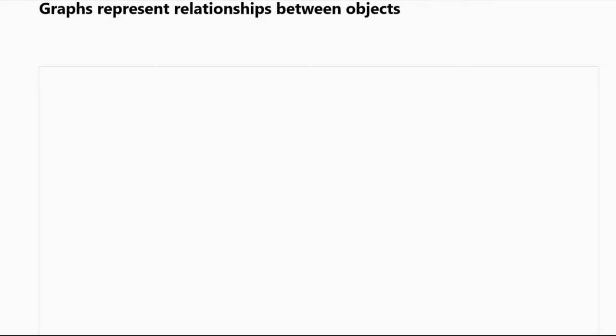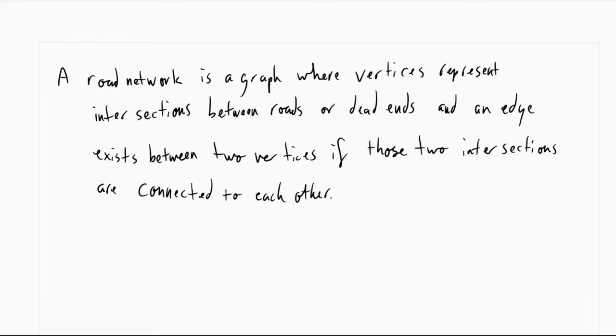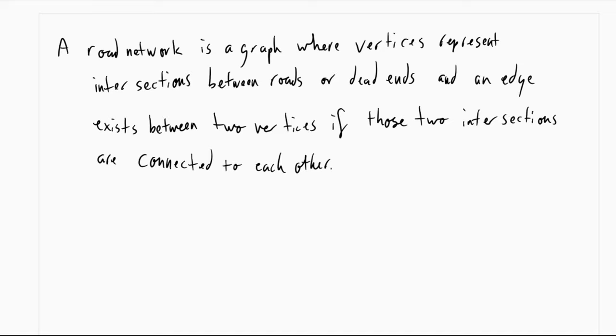Something you might remember from 202 is using graphs to talk about road networks. By the way, when I talk about a certain type of real life graph, I'm going to talk about it by defining what the vertices are in that graph and what an edge between two vertices represents. So when we talk about graphs representing roads, we are usually talking about a road network, which is a graph where vertices represent specifically intersections between two roads or dead ends. And an edge exists between two vertices if those two intersections are connected to each other. Basically, if the two intersections represented by those vertices are connected with a road segment, then there's an edge between those two vertices.